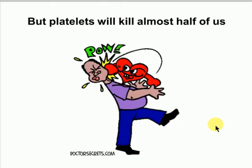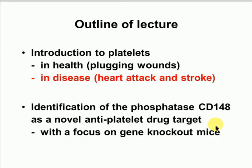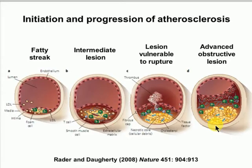That's the good side of platelets — we couldn't live without them. But they will end up killing almost half of us, through heart attack or stroke. We've all unfortunately got this disease called atherosclerosis going on in our arteries. It's not entirely clear how this disease starts, but it's been seen in newborn babies and is a consequence of our Western lifestyle — high-fat diet, lack of exercise, smoking, too much alcohol.